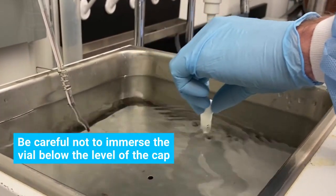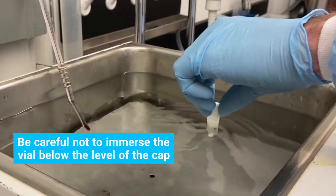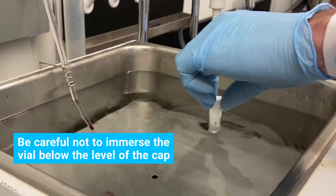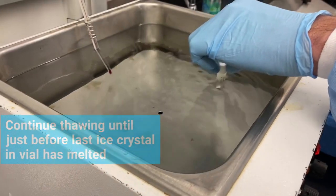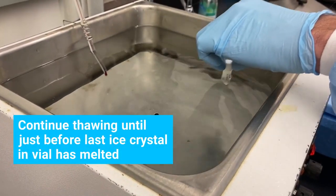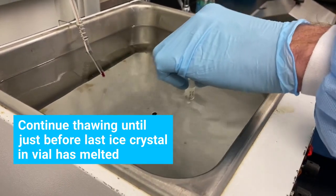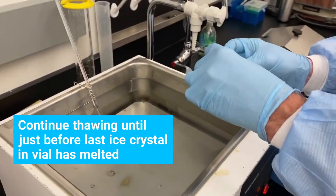Be careful not to immerse the vial below the level of the cap to avoid any potential contamination of the cells. Monitor the vial closely and continue thawing until just before the last ice crystal is melted. Do not vortex the cells.